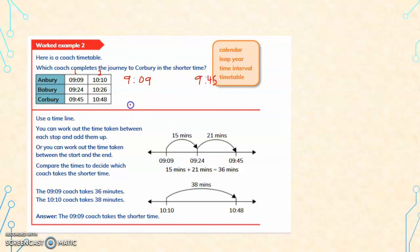Use a timeline. You can work out the time taken. So it starts from Anbari. One coach starts at Anbari at 9:09 and reaches Corbary at 9:45. So this time interval - 9:09 to 9:10, that is 1 minute. Round it, calculations will be easier. Now 9:10 to 9:30, that is 20 minutes. 9:30 to 9:45 is another 15 minutes - quarter of an hour. One quarter of an hour is 15 minutes. So total time is 20 plus 15 is 35 plus 1, 36 minutes. So time taken by coach 1 is 36 minutes.